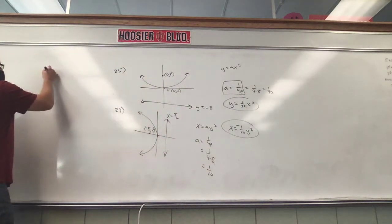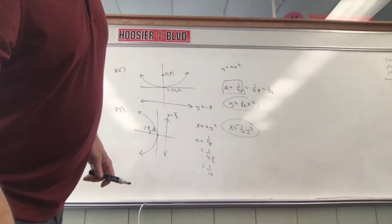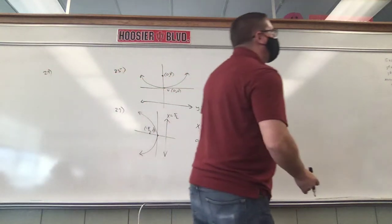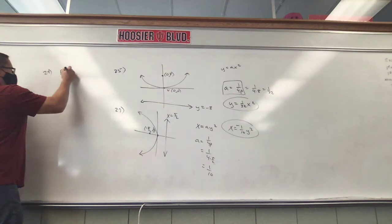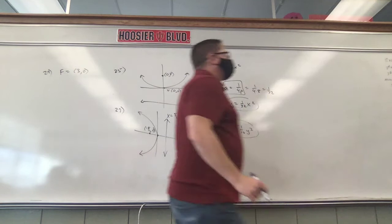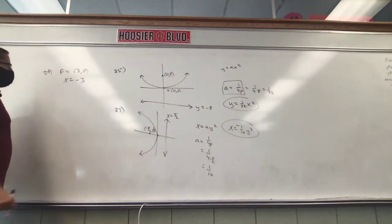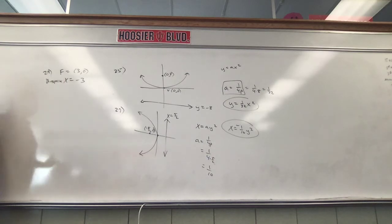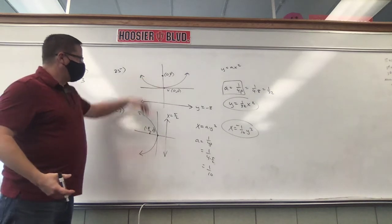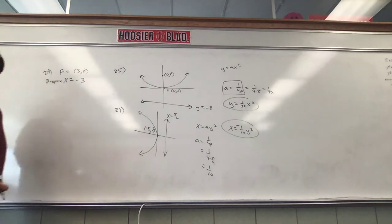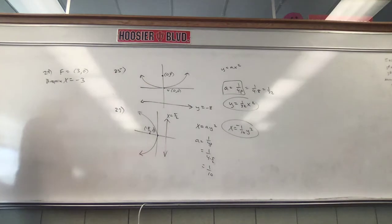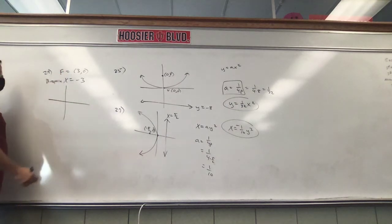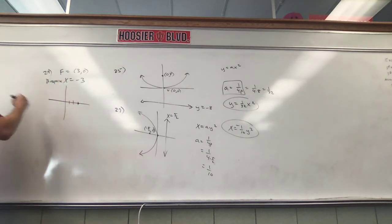Let's look at number 29. The good news is we're basically doing the same problem over and over. The only difference on number 29 is there's no picture, so we're going to draw one. Focus is 3, 0. And x equals negative 3 is the directrix. So our focus is 3, 0 and the directrix is x equals negative 3. We draw the focus as a point 3 to the right, and the directrix as a vertical line 3 to the left.